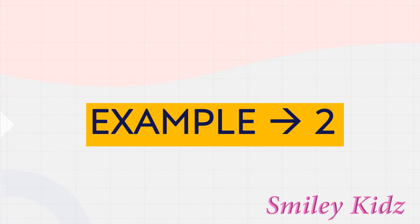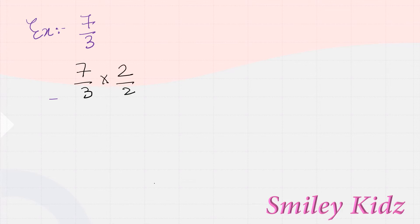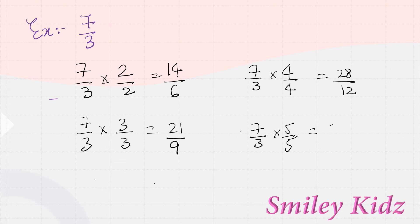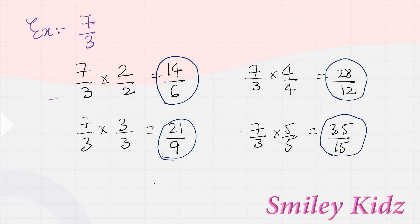Let's see another example. Let's consider 7/3. I will find the equivalent rational numbers of 7/3. 7/3 multiplied by 2/2 equals 14/6. 7/3 multiplied by 3/3 equals 21/9. 7/3 multiplied by 4/4 gives us 28/12. 7/3 multiplied by 5/5 gives us 35/15. So 14/6, 21/9, 28/12, and 35/15 are the equivalent rational numbers of 7/3.